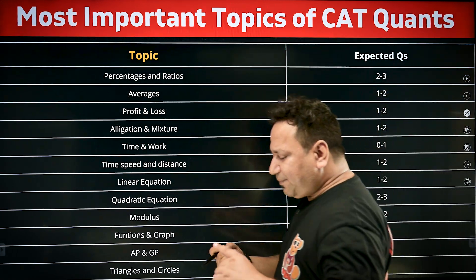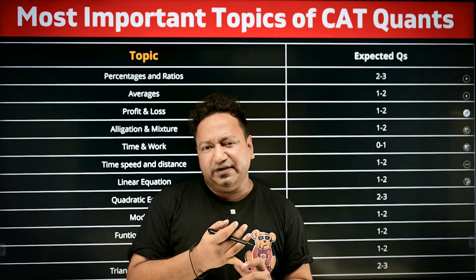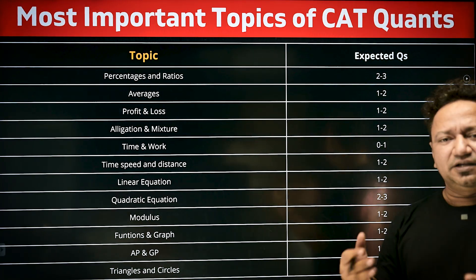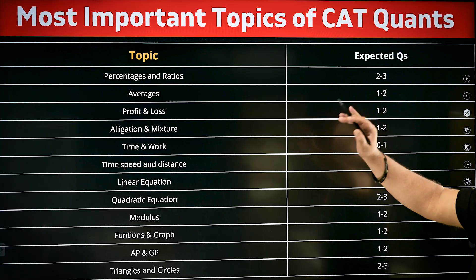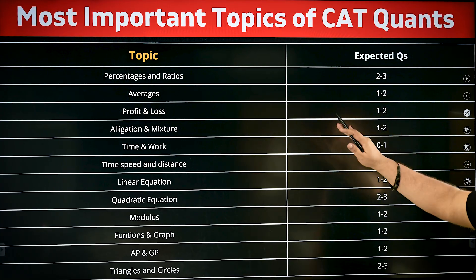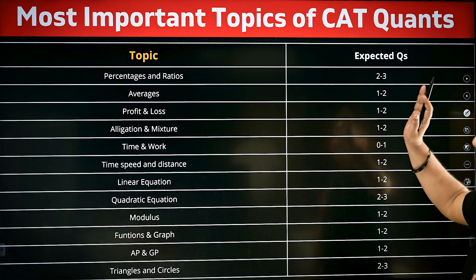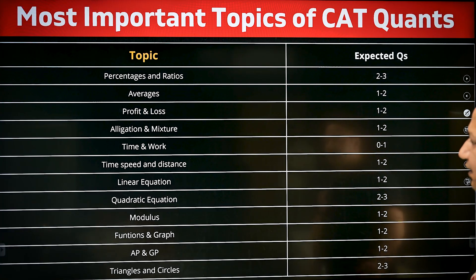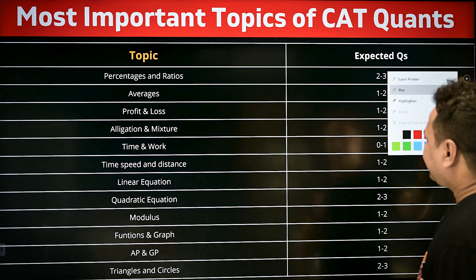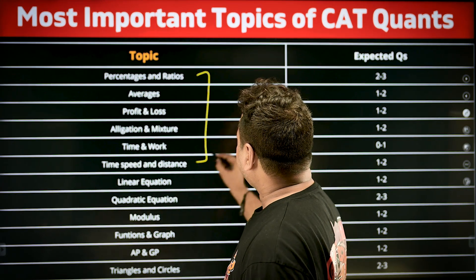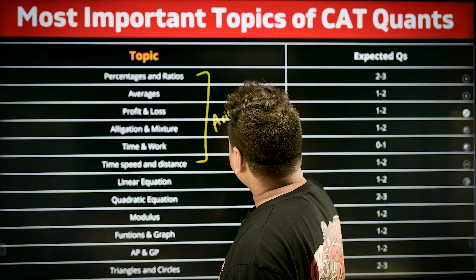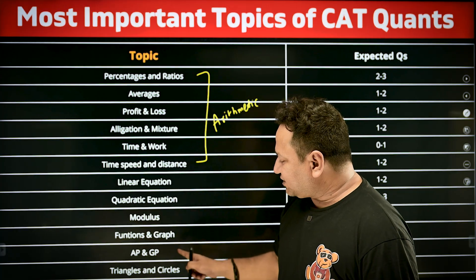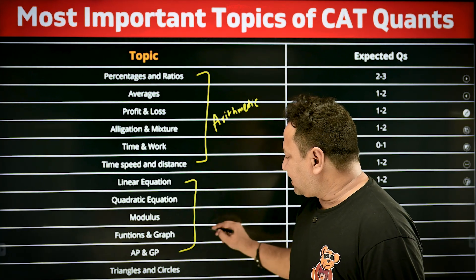In quant, we have a proper syllabus. Let me walk you through the topics and expected questions in CAT 2025 based on historical data. Percentage and ratios: 2 to 3 questions. Averages: 1 to 2 questions. Profit and loss: 1 to 2 questions. Allegation and mixture: 1 to 2 questions. Time and work: 0 to 1 questions. Time, speed and distance: 1 to 2 questions. This entire bracket comes under arithmetic. For algebra: linear equations, quadratic equations, modulus, functions and graphs, AP and GP all come under algebra.